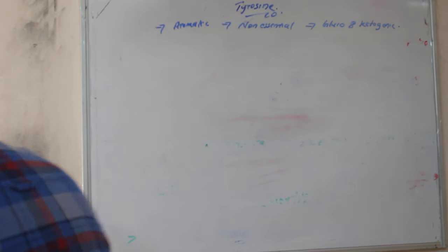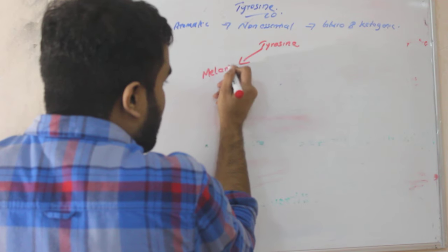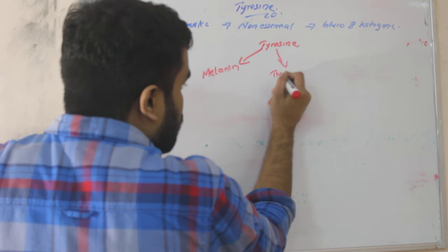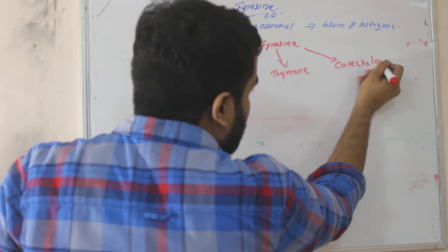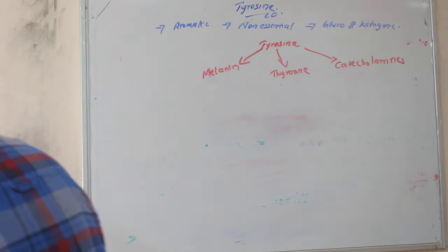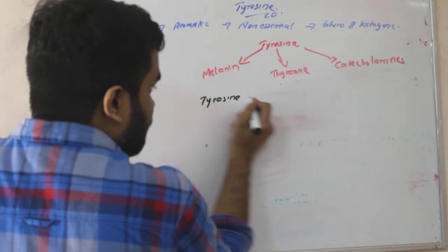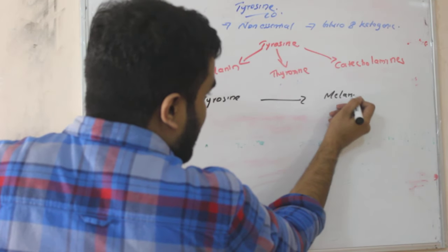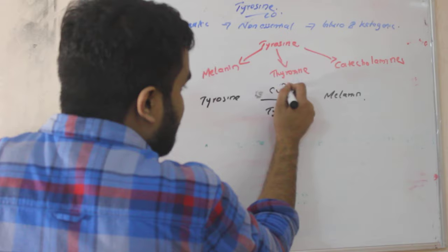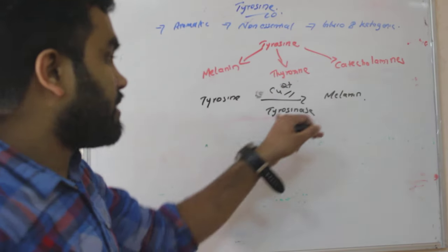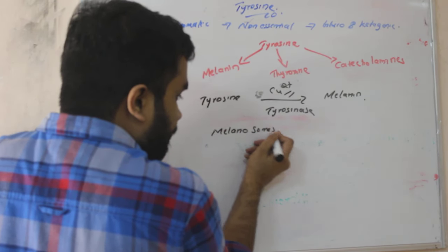Now the main thing we are getting from tyrosine are first one is our melanin or pigment, then the hormone thyroid hormones T3, T4, and catecholamines. First we will study how tyrosine is forming melanin. It is by the enzyme tyrosinase. Here the cofactor is copper, very important. Copper is the cofactor forming melanin from tyrosinase. This reaction is taking place in the melanosomes, melanosomes of melanocytes.